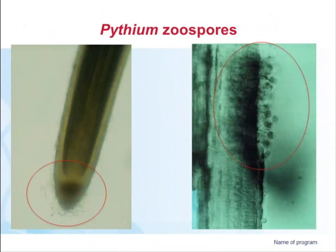Quite a lot of those zoospores, when they infect, are attracted to the root tips. That's why very small seedlings where there's leaky little root tips, or even germinating seeds, can be infected very quickly, because there's that chemoelectric attraction to the area just behind the root cap, called the zone of elongation, where a lot of nutrients are released into the rhizosphere. Where there's damage to a root, that's where they can also be attracted — leaky plant tissue and amino acids coming out attract those zoospores.